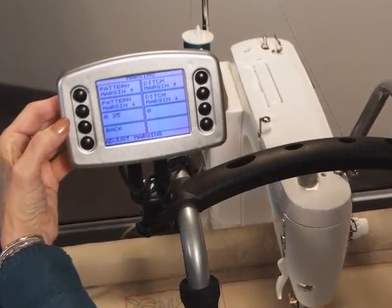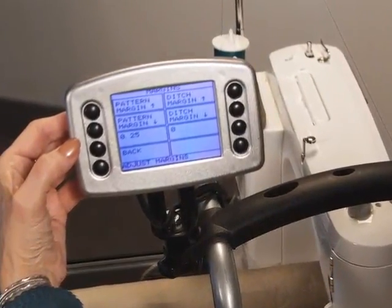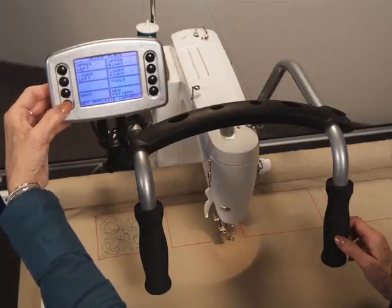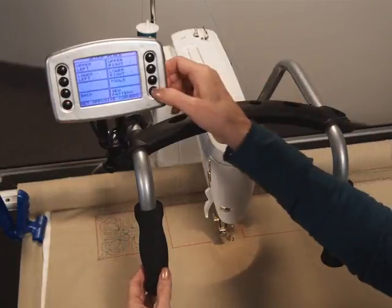Note that you can also set a ditch margin to offset your ditch stitch from your block border. Having set your block margin, click the back button. Now you are ready to press the sew pattern button and proceed to stitch.